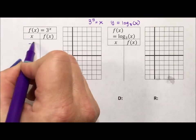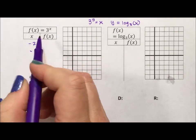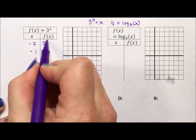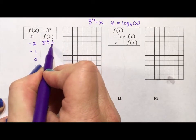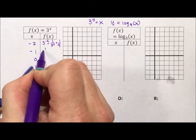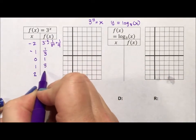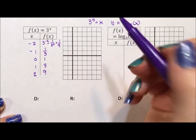So if I put in the values negative 2, negative 1, 0, 1, 2, 3 to the negative 2 is the same as 1 over 3 squared, which is 1 ninth. 3 to the negative 1 is 1 third. Anything to the power of 0 is 1. 3 to the first is 3, and 3 squared is 9.